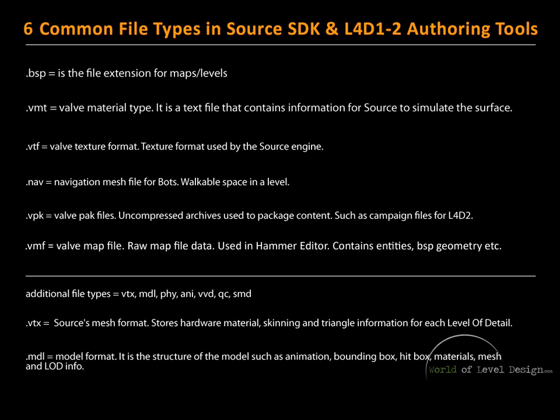So those are the six common file types you will be working with when creating your maps. There are additional file types such as VTX, MDL, PHY, ANI, VVD, QC, and SMD. Most of these are for custom models and the various files that go along with them. I won't be covering custom model files in this tutorial — that will be for later tutorials. Just know that there are additional file types, but the most common ones are BSP, VMT, VTF, navigation files, VPK, and VMF.